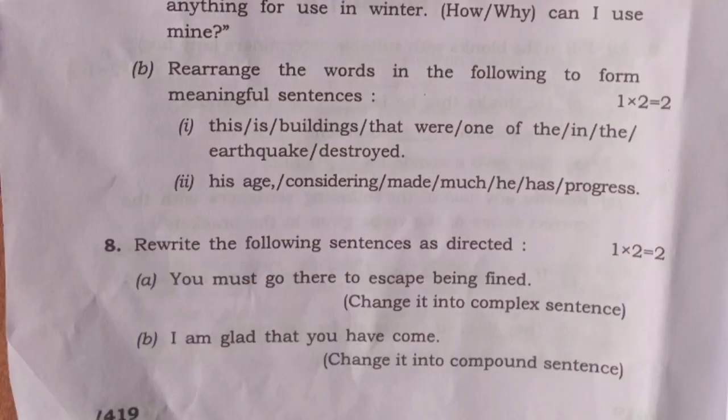Here is question 7 number A2 and 7 number B2 — word rearrangement to make meaningful sentences. Correct answer 1: 'This is one of the buildings that were destroyed in the earthquake.' Number 2 correct answer: 'Considering his age, he had made much progress.' Question 8 number A2: 'You must go there to escape being fined.'